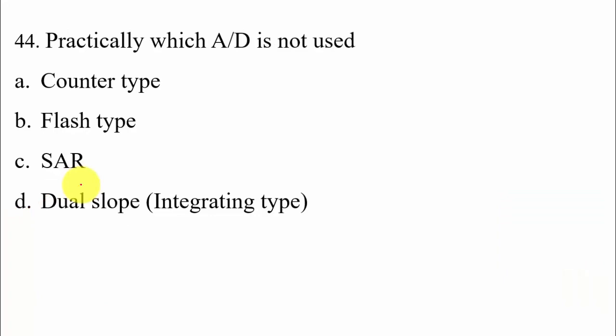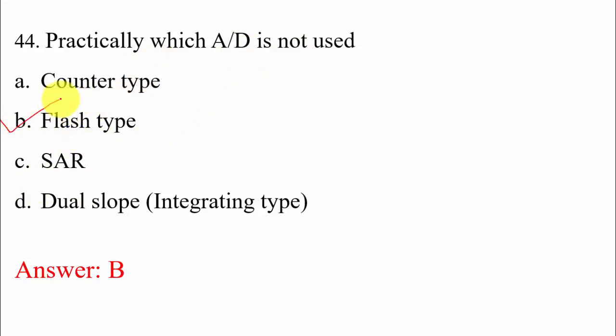44th question: which A-to-D converter is practically not used? Flash type is not used in practice because the number of comparators required is 2ⁿ − 1, which becomes a very large quantity. Hence flash type is not preferred.